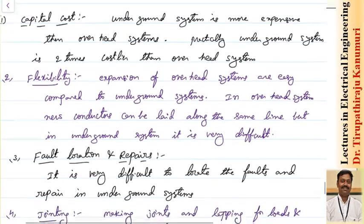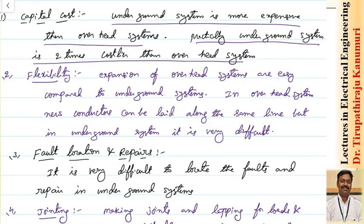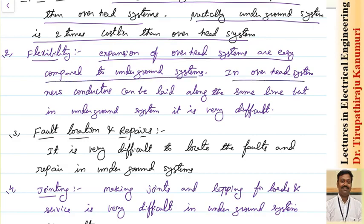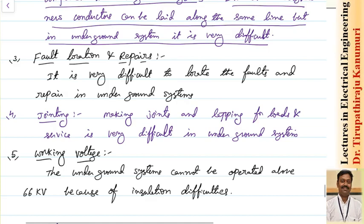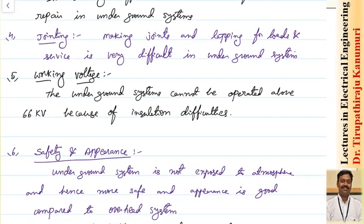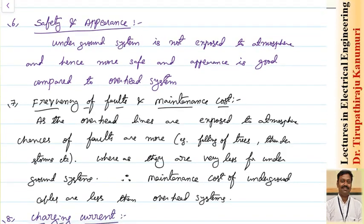Now the summary: First, capital cost — underground cables are more expensive than overhead systems; practically underground systems are two times costlier. Second, flexibility — expansion of overhead systems is easy; in overhead systems a new conductor can be laid along the same line, but in underground systems it is very difficult. Third, fault location and repairs are very difficult in underground systems. Tapping for load is also very difficult in underground systems, and underground systems cannot be used for voltages greater than 66 kV.